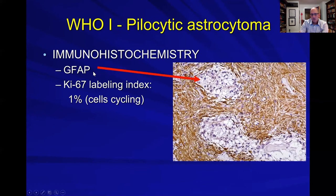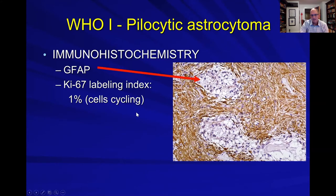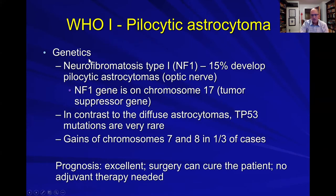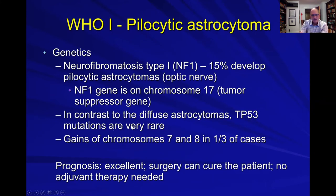As far as immunohistochemistry markers, these are heavily GFAP-positive (glial fibrillary acidic protein), and the Ki-67 index would be very low — around 1% — referring to the number of cells that are cycling or mitotically active. As far as genetics, you have to think about NF1: 15% of NF1 patients will develop these tumors, especially in the optic nerve. The NF1 gene is on chromosome 17 and is a tumor suppressor gene. In contrast to other astrocytomas, TP53 mutations are very rare in this tumor.